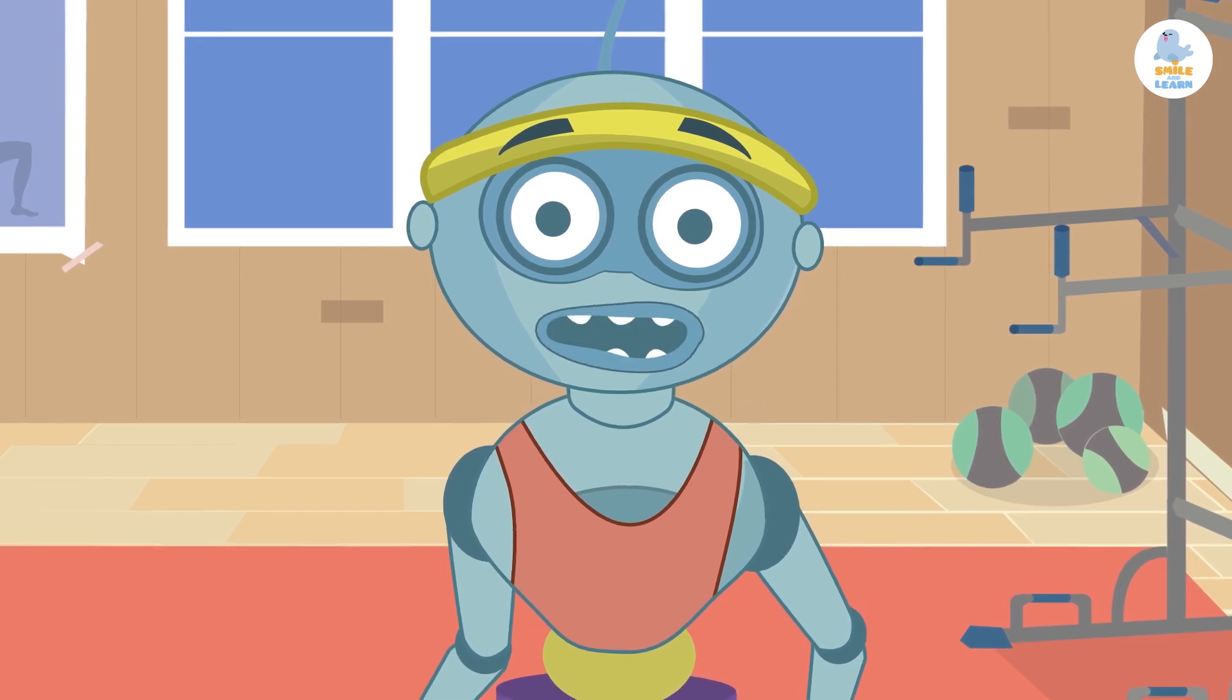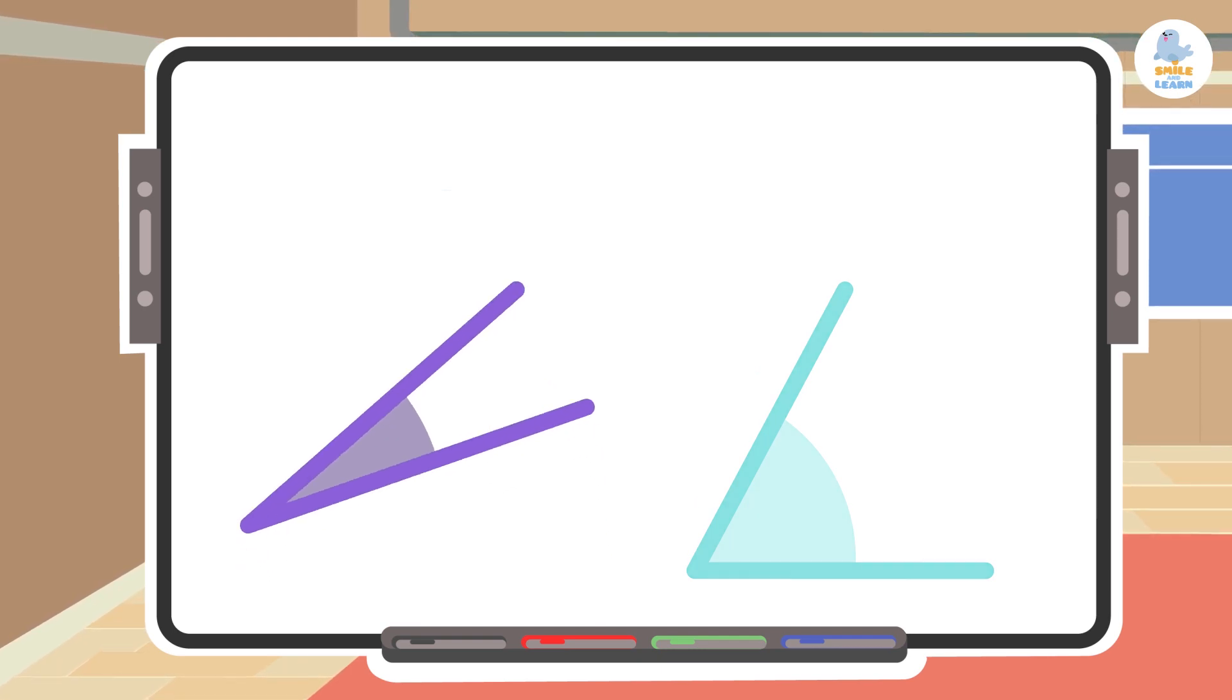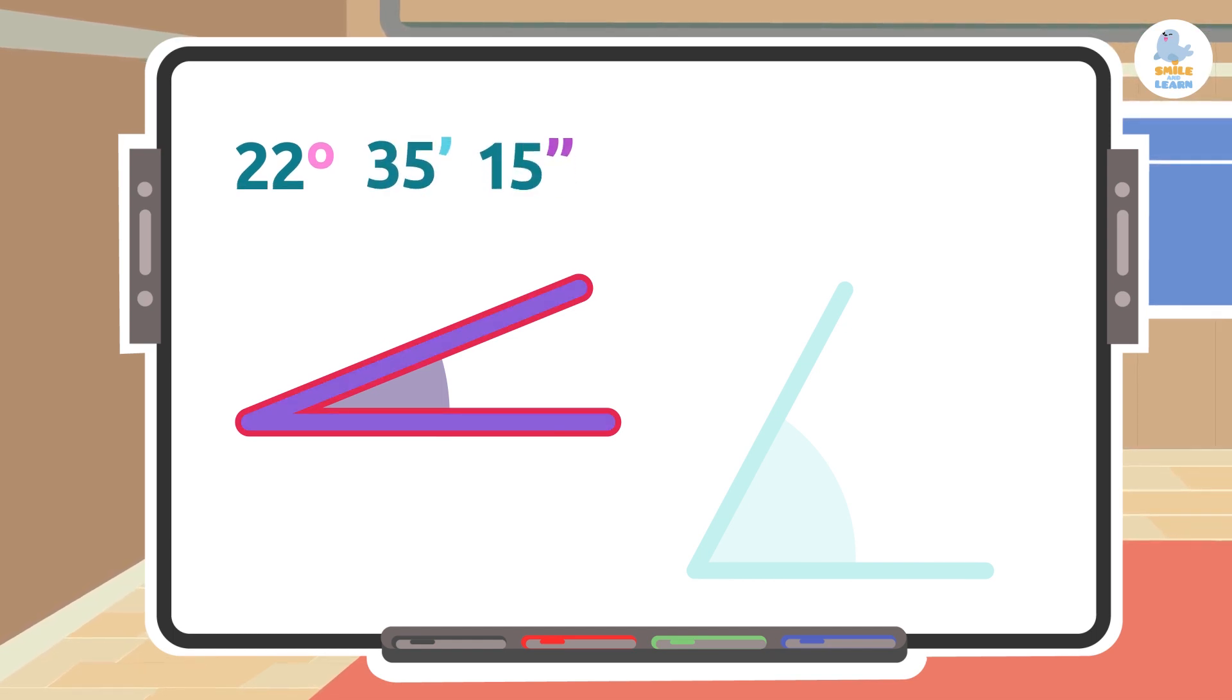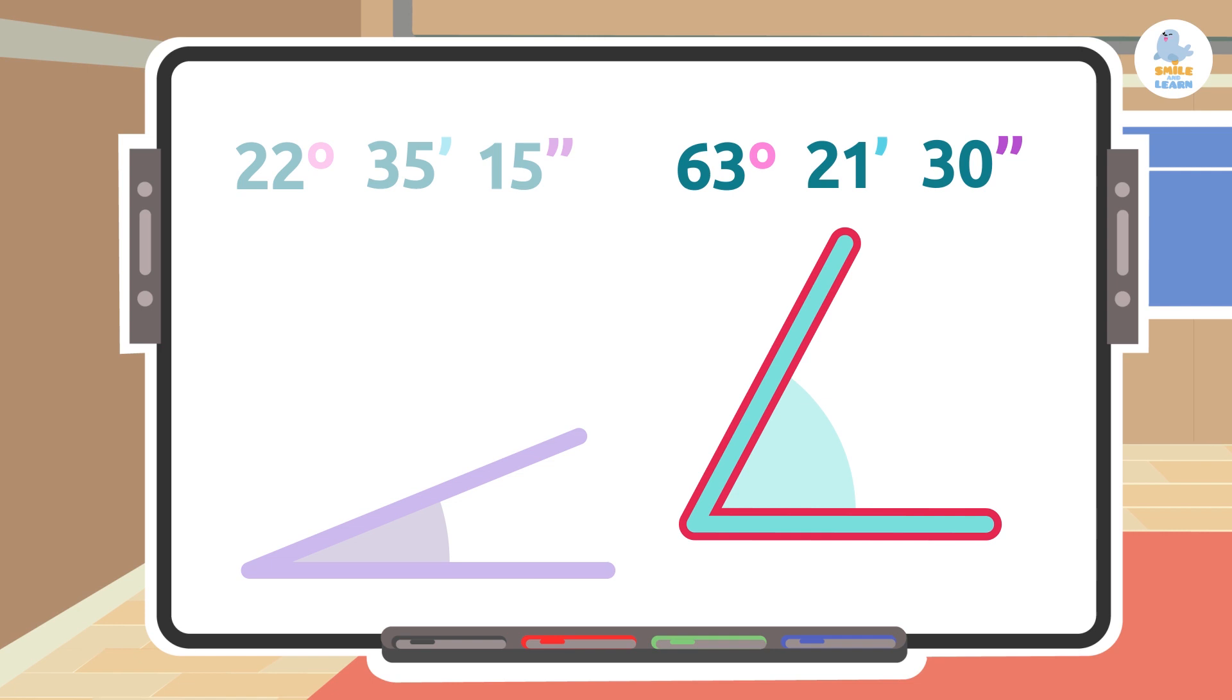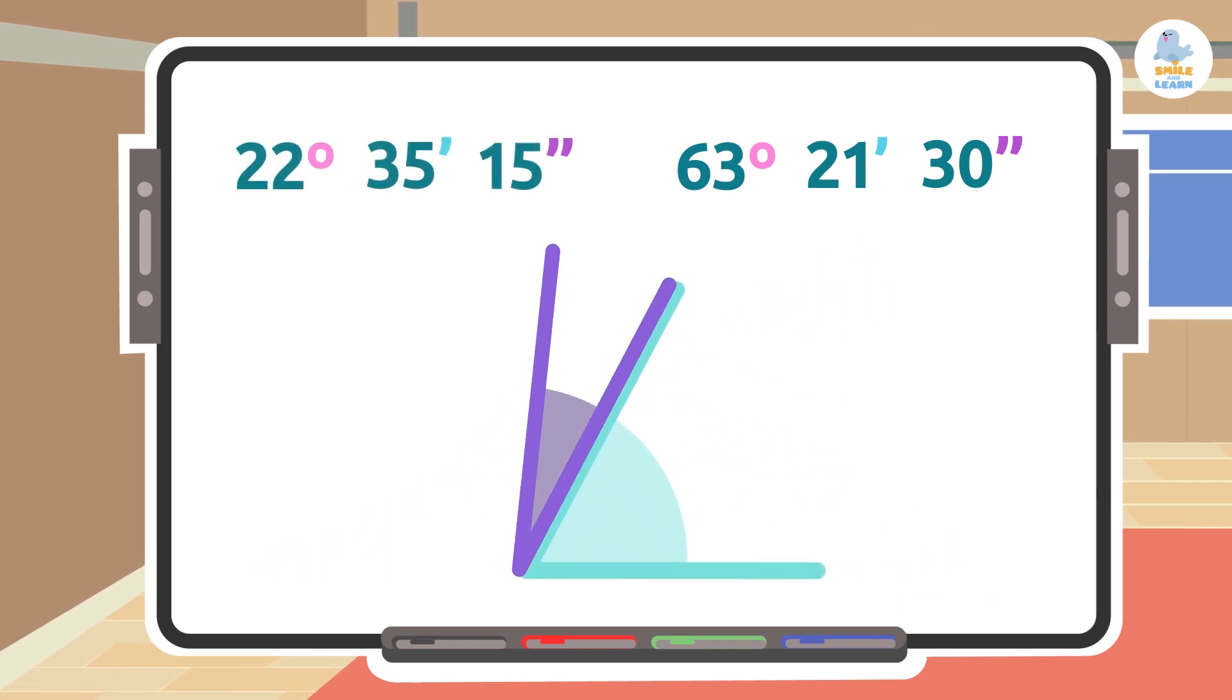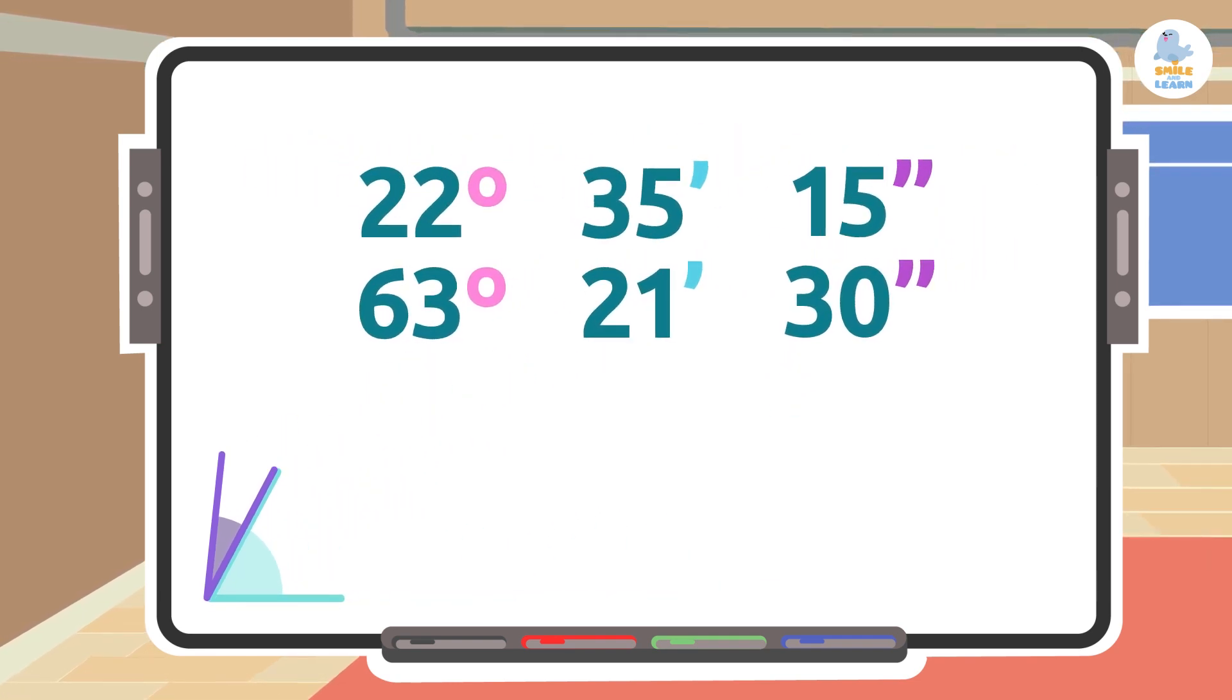Today we'll learn how to add angles with some examples. You'll see how easy it is. Let's start. We need to add the following angles: on one side we have one measuring 22 degrees 35 minutes 15 seconds, and on the other side we have one measuring 63 degrees 21 minutes 30 seconds. What would be the exact sum of both angles?